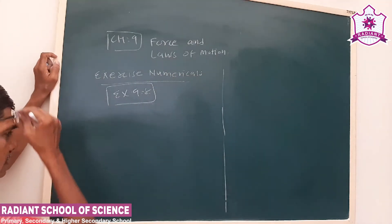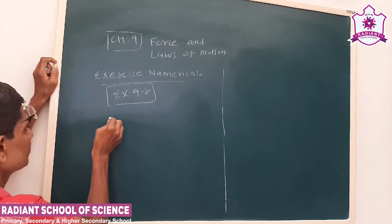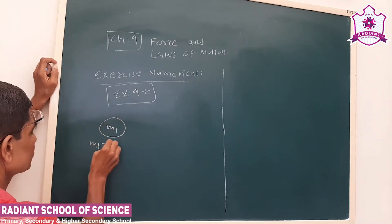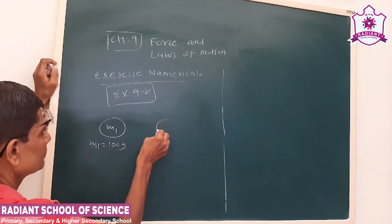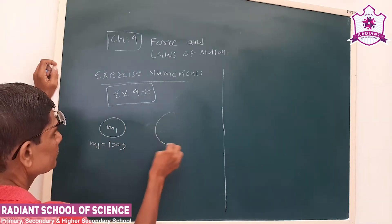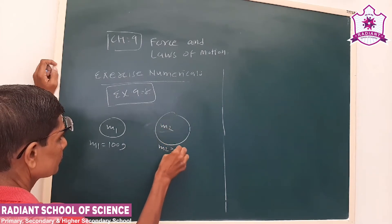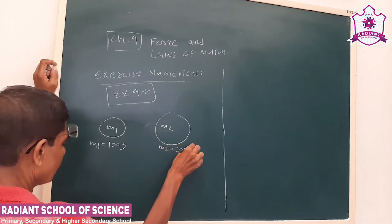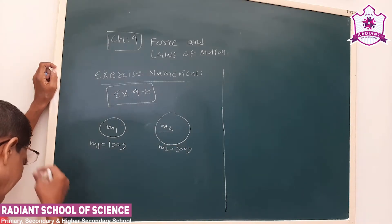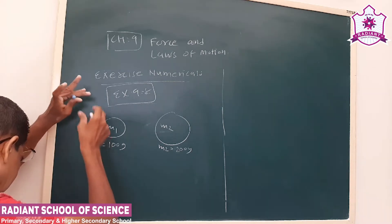Exercise number 9.8: Two objects of mass M1 equal to 100 grams and M2 equal to 200 grams are moving along the same direction with velocities of 2 meters per second and 1 meter per second respectively.